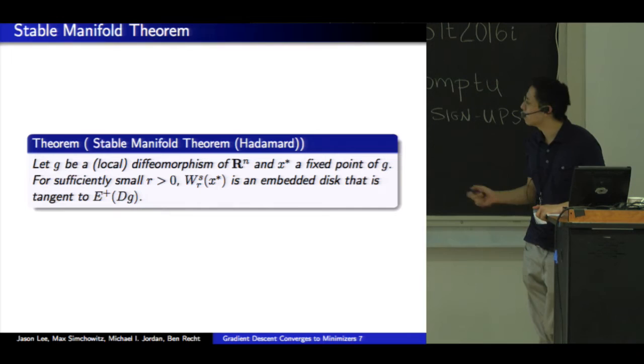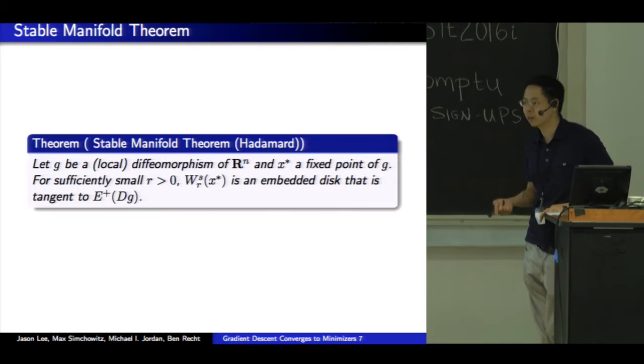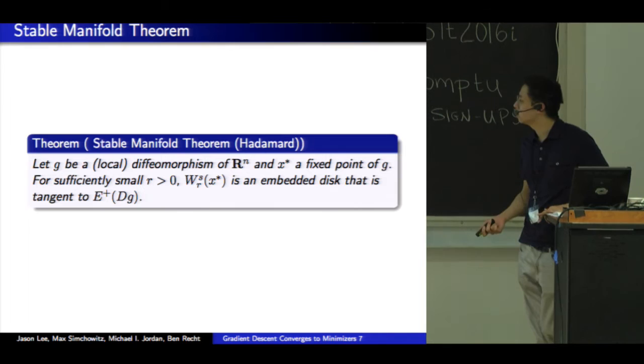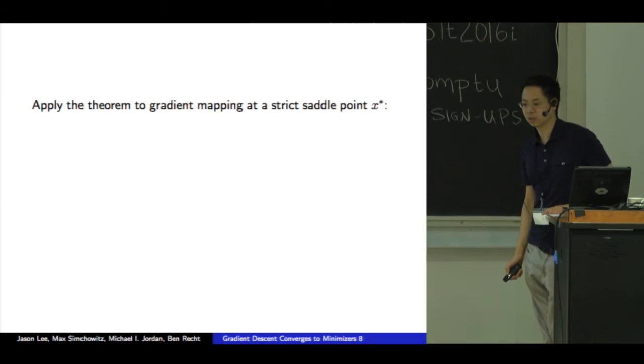Our main tool will be the stable manifold theorem that's classical in the dynamical systems literature. And it says that if I have a local diffeomorphism of a dynamical system g that's smooth, a local diffeomorphism, and x star is a fixed point, then the local stable manifold is an embedded disk of the same dimension as a stable subspace. And furthermore, they're tangent.